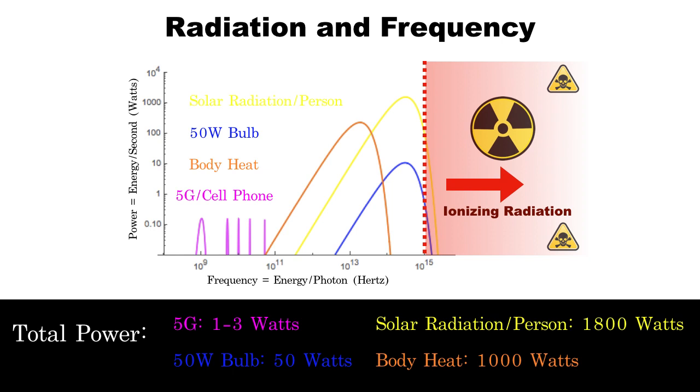As we can see, not only do the sun, light bulbs, and the human body radiate at higher frequencies than your cell phone—that is, each photon has more energy—but they also radiate at higher power, meaning that the total energy or the total number of photons is higher. So if cell phones worry you, you should be terrified of these other sources.